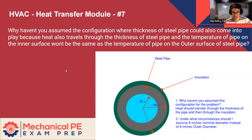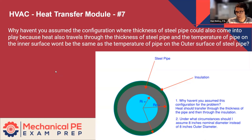Heat transfer module number seven. Why haven't you assumed the configuration where the thickness of the steel pipe could also come into play? Because heat also travels through the thickness of the steel pipe, and the temperature of the pipe on the inner surface won't be the same as the temperature on the outer surface. So the question is: why am I not dealing with the resistance of the pipe itself — the thickness of the pipe having some resistance to heat transfer?